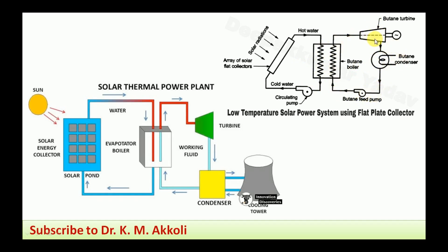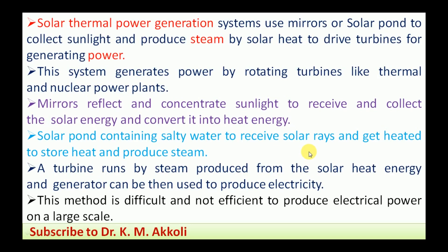In this way, electricity is generated using the solar thermal power plant — thermal meaning heat energy is directly used for solar energy conversion into electricity. Solar thermal power generation systems use mirrors or a solar pond to collect sunlight and produce steam by solar heat to drive turbines for generating power. This system generates power by rotating turbines, just like thermal and nuclear power plants.